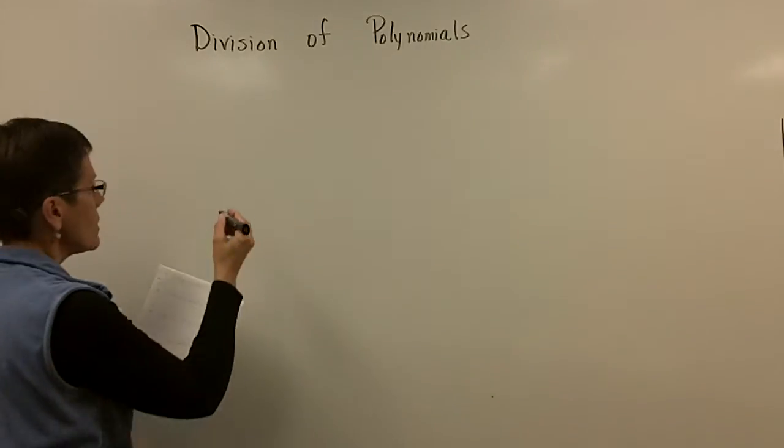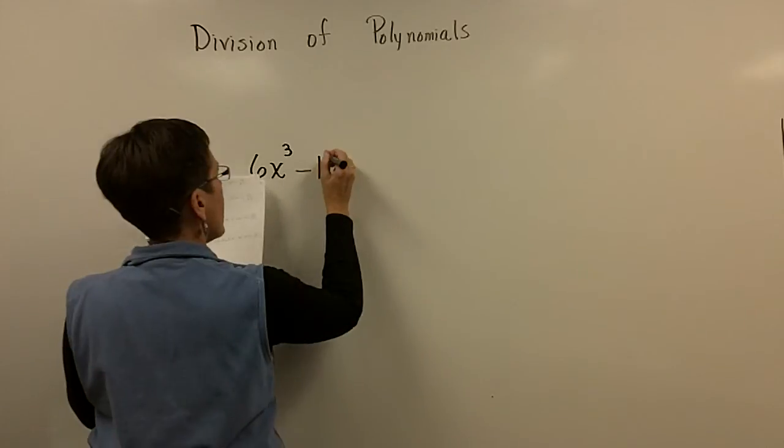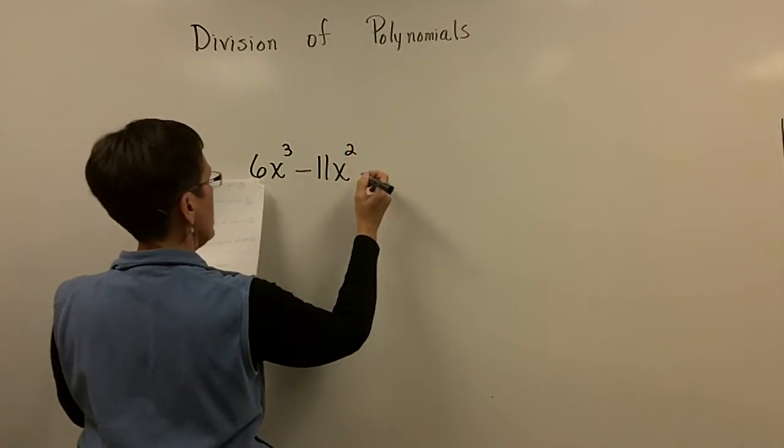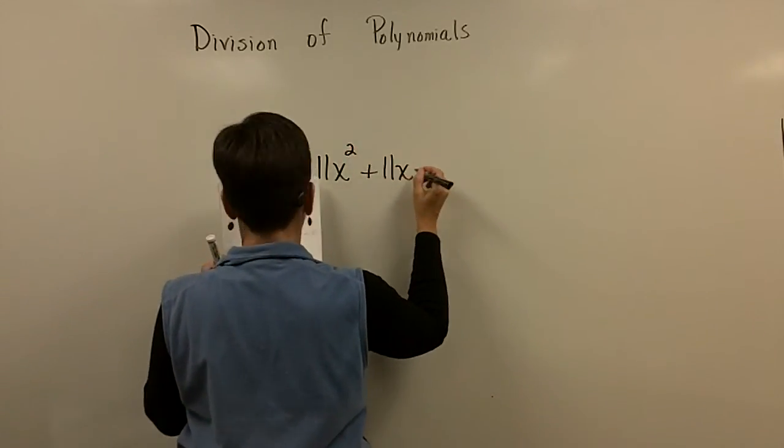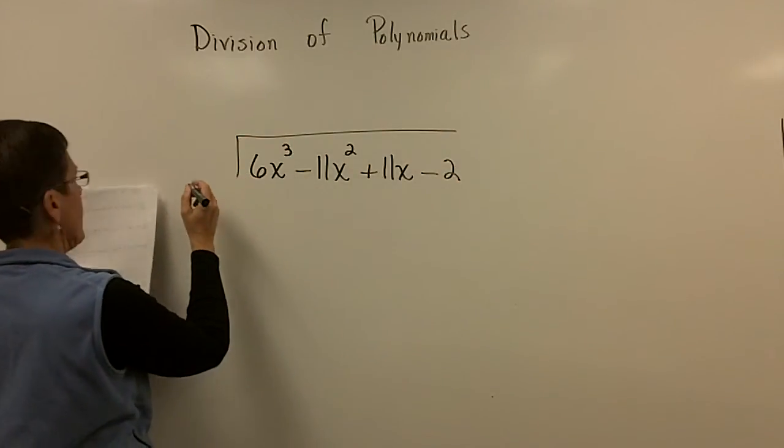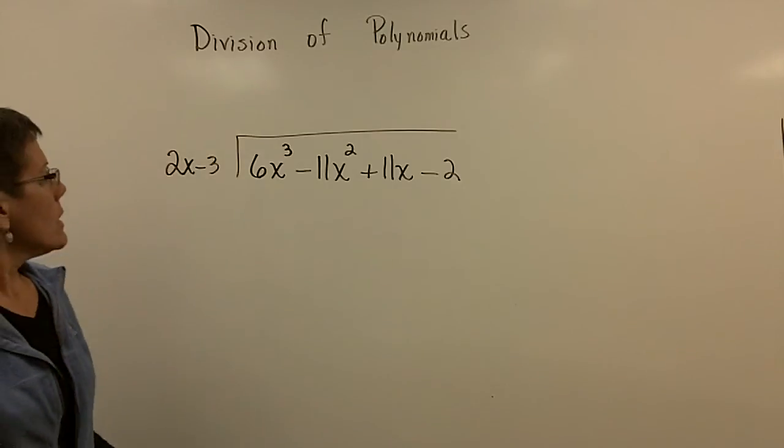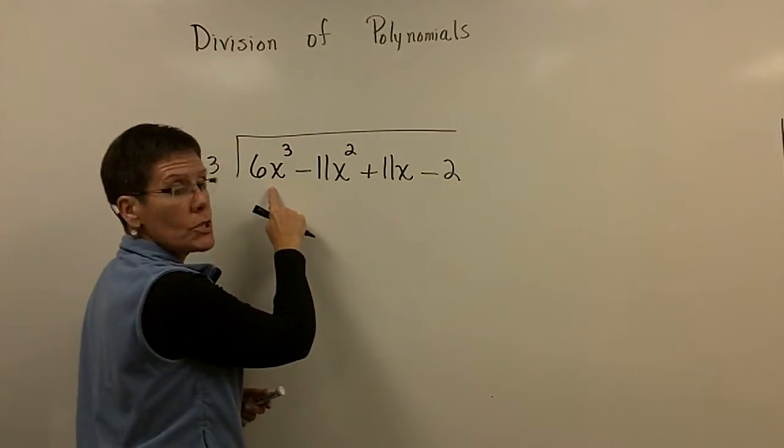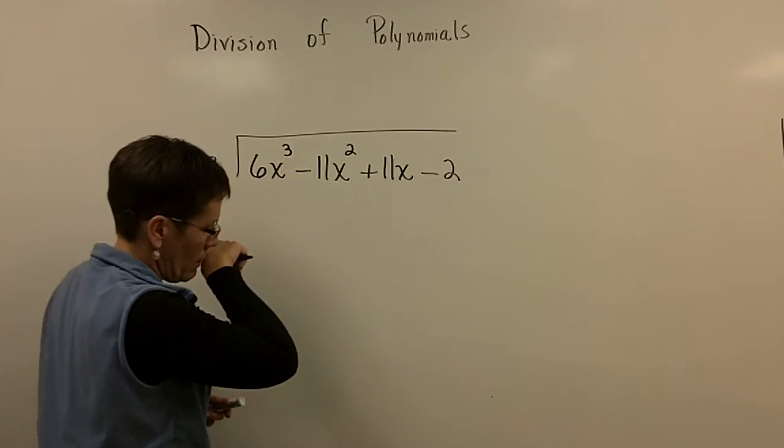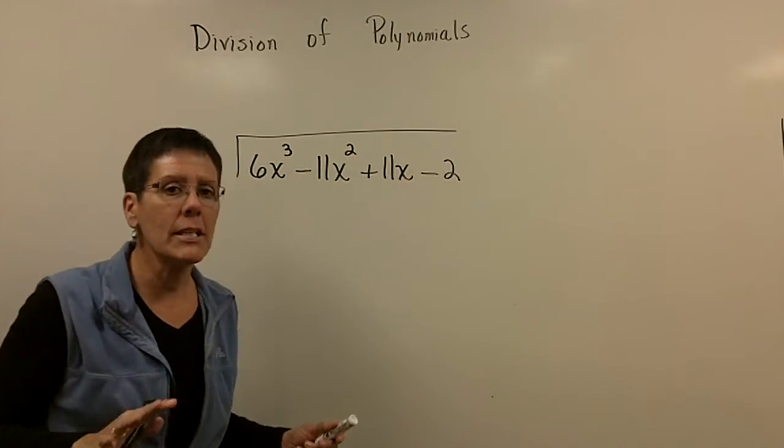Let's take a look at 6x cubed minus 11x squared plus 11x minus 2. And let's divide by 2x minus 3. So again, the process is the same. I didn't need any ghost terms. I have an x cubed, excuse me, x squared, x to the first, and a constant. So I didn't need any holes.